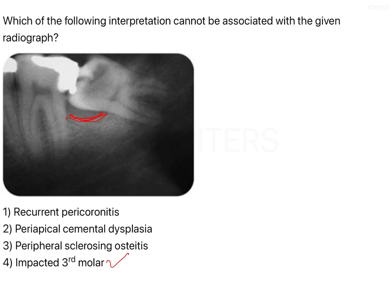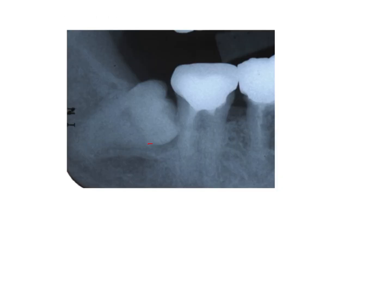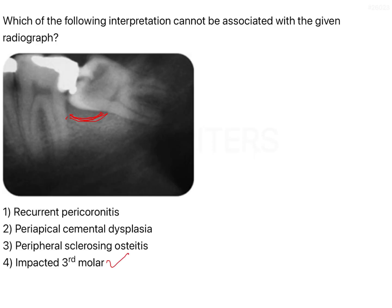That bone loss is what you see as the radiolucency in the radiograph — below the crown there is a radiolucent gap indicating bone loss, primarily due to recurrent pericoronitis. So from this radiograph we have confirmed: impacted third molar and recurrent pericoronitis are both correctly associated with this radiograph.